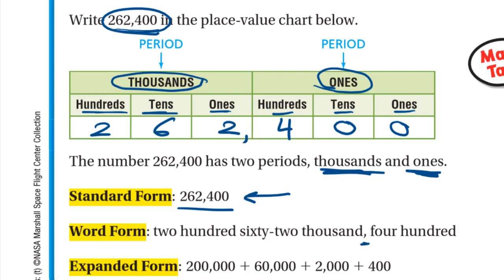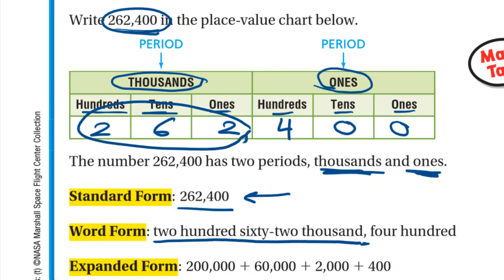In word form, we write what is in the thousands period first, then a comma, then write the rest of the number. So we write 262,000 — that is the thousands period — then put a comma, then write the rest of the number, which is 400.